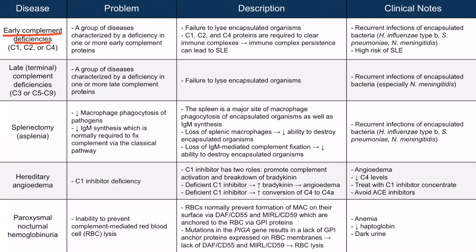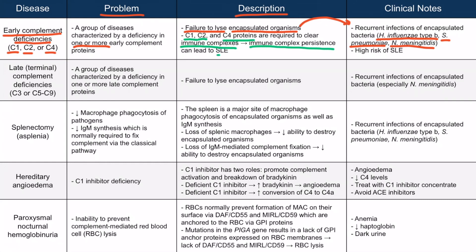Let's start with early complement deficiencies, involving complement proteins C1, C2, or C4. This is a group of diseases characterized by a deficiency in one or more early complement proteins, which ultimately means failure to lyse encapsulated organisms. Without the first portion of the complement system, you won't get the membrane attack complex. These patients get recurrent infections with encapsulated bacteria such as Haemophilus influenzae type B, Strep pneumoniae, and Neisseria meningitidis. Additionally, C1, C2, and C4 are required to clear immune complexes — deficiency leads to immune complex persistence, which can cause lupus. Patients with early complement deficiencies have a high risk of developing lupus.